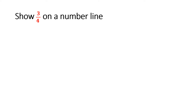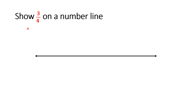Now let's discuss an example of how to do this lesson. I have to show 3/4 on a number line. First, I will draw a line. The beginning and the end of the number line starts from zero and ends on one. This is the same for all questions — the number line must start from zero and end on one.